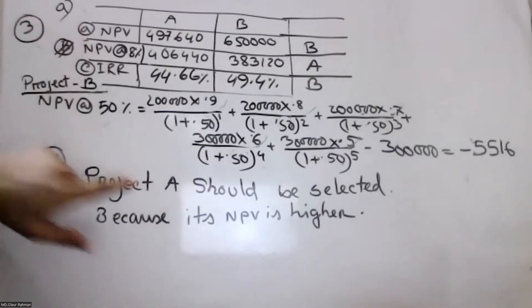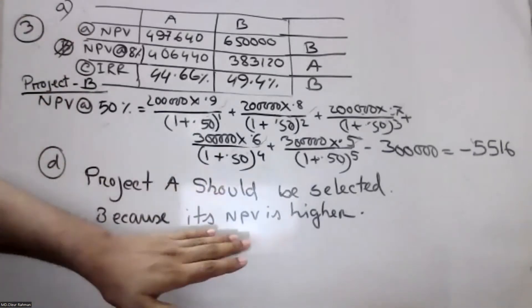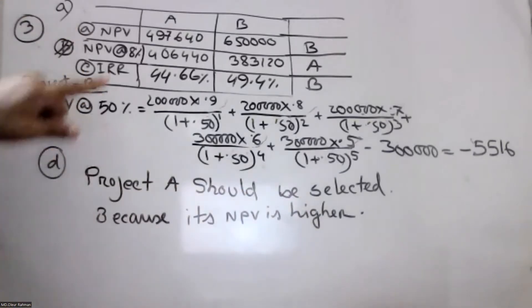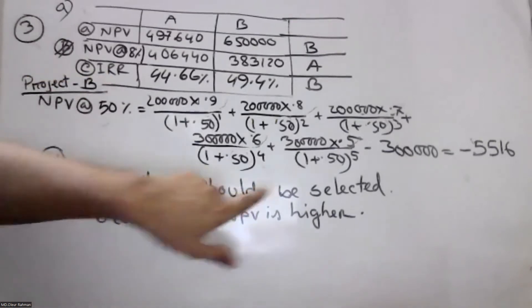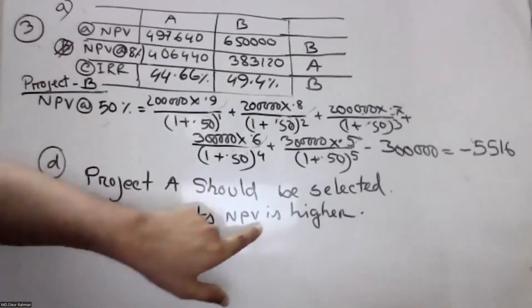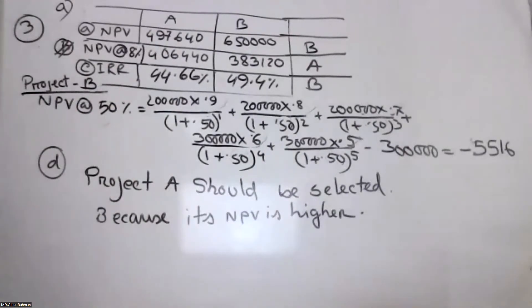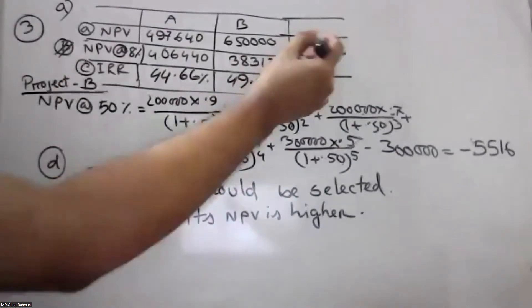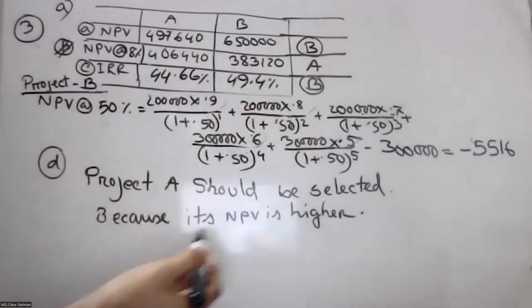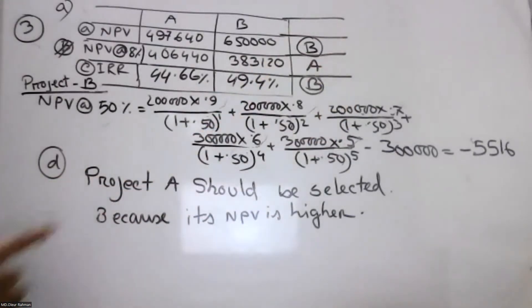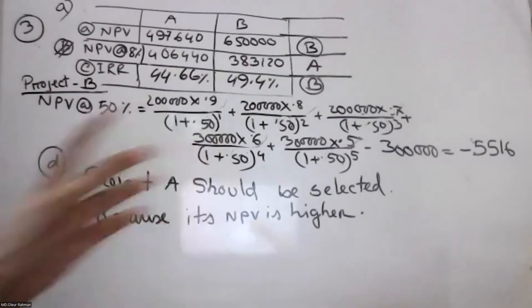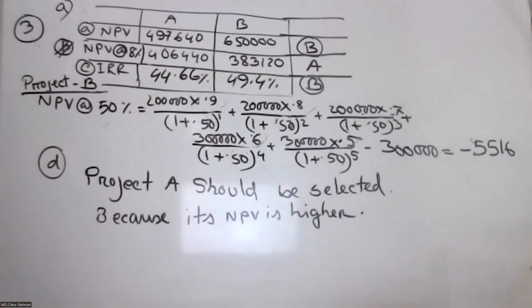Project B should be selected because its NPV and IRR are higher.